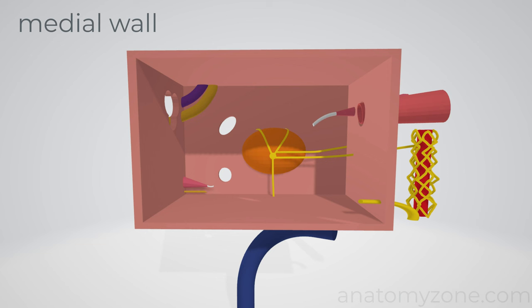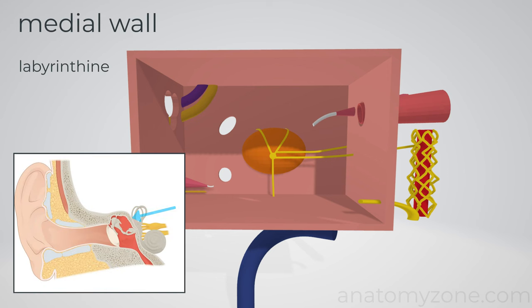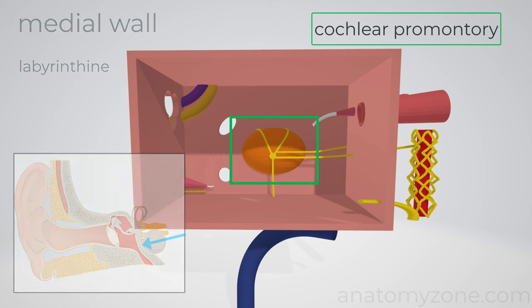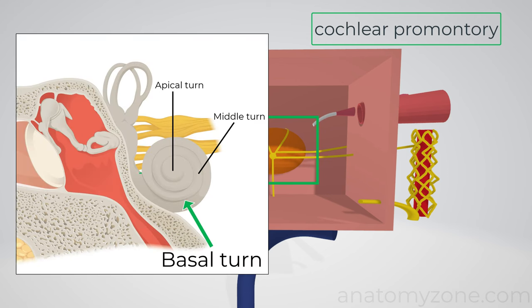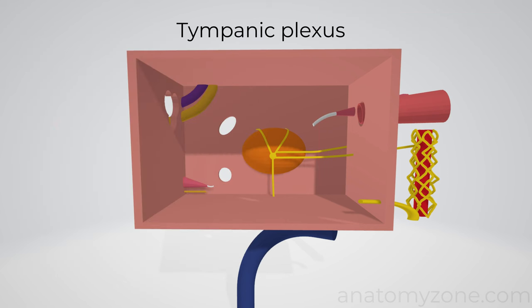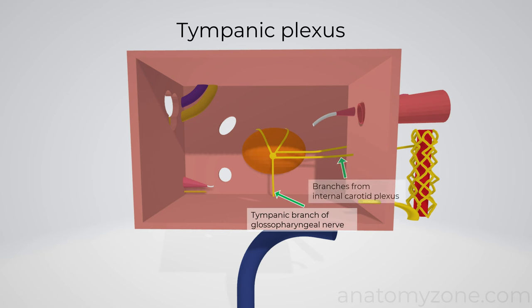The medial or labyrinthine wall is formed by the lateral aspect of the inner ear. The promontory is a convex protrusion formed by the bone overlying the basal turn of the cochlea. In this coronal section, you see the relationship of the basal turn to the middle ear cleft, forming the convex protrusion of the promontory. The promontory is covered by the tympanic plexus, which receives branches from the glossopharyngeal nerve, cranial nerve 9, and branches of the internal carotid plexus.